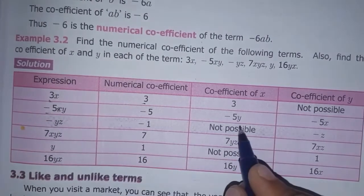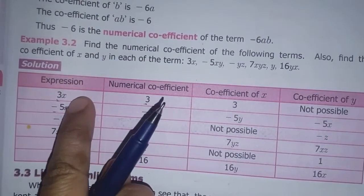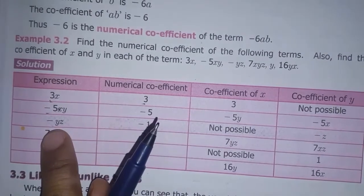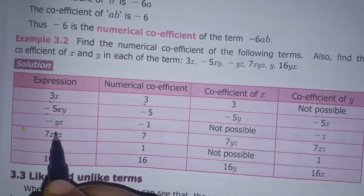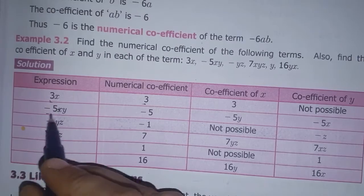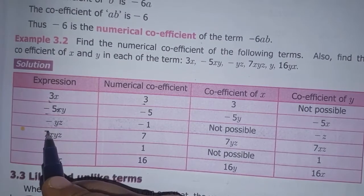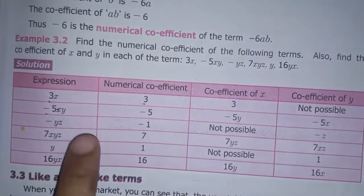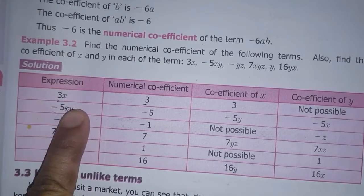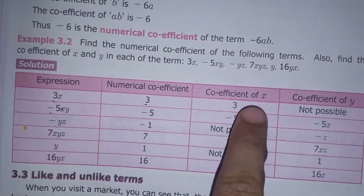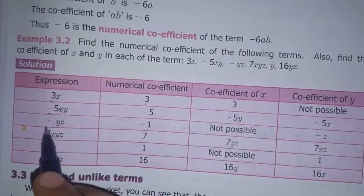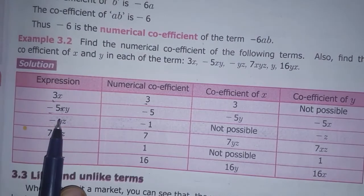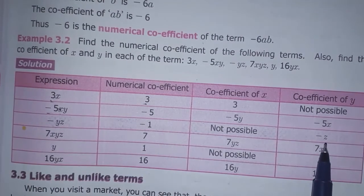For minus yz: the numerical coefficient is minus 1. Coefficient of x — x is not present. Coefficient of y: the remaining factor is minus z. So the coefficient of y is minus z.